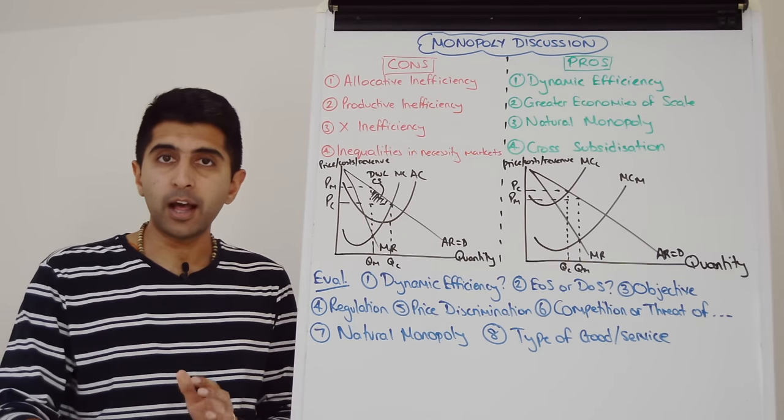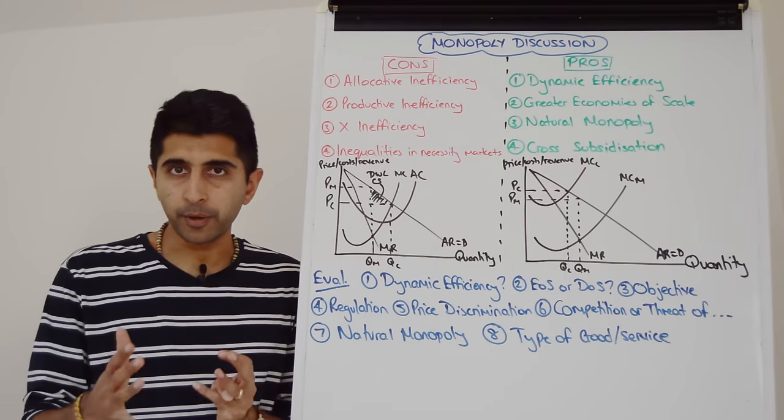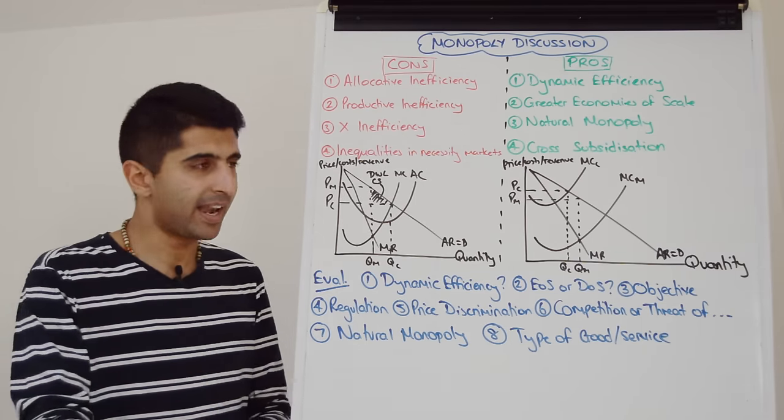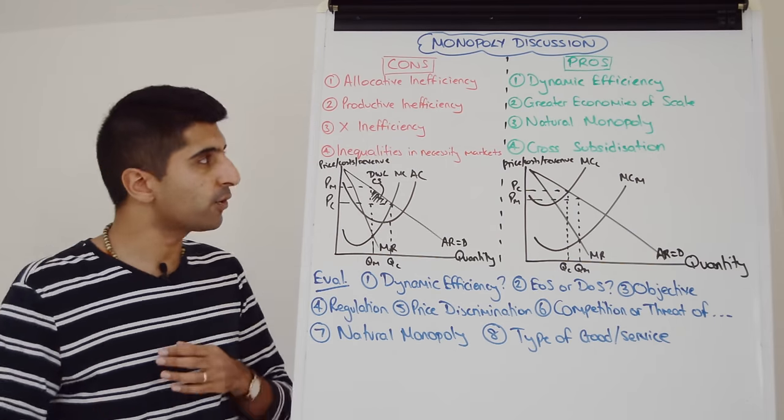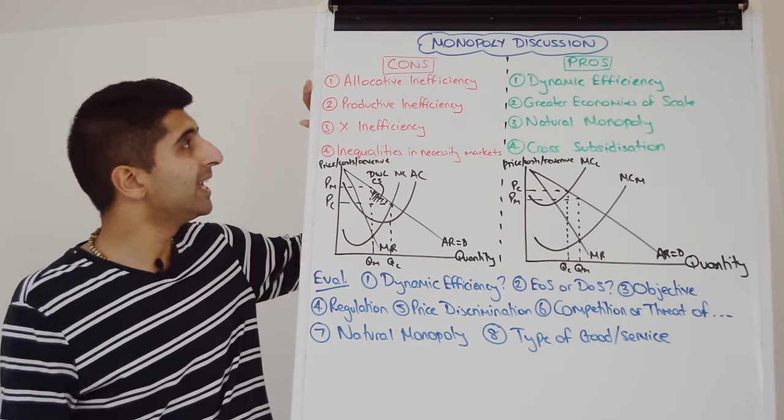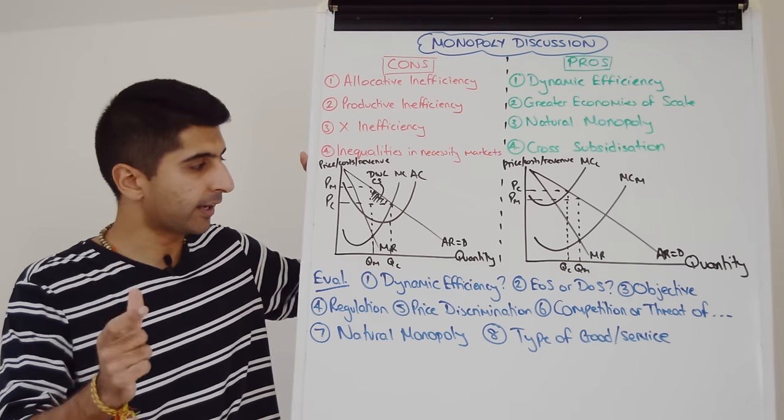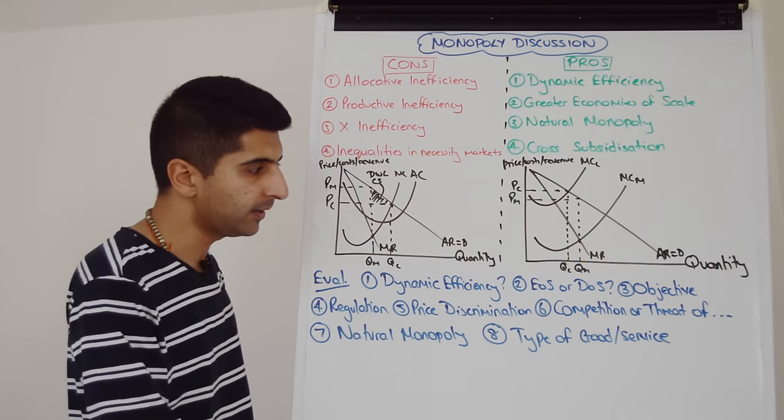A regulated monopoly can help reduce some of the inefficiencies. There is a video later in this playlist where we go into more detail as to how we can regulate monopolies that can help reduce some of their negative impacts here. Price discrimination we know can exaggerate the negatives of monopoly, especially the allocative inefficiencies and the inequalities that monopolies can create. So that you can use to kind of weigh up your arguments against monopoly here.